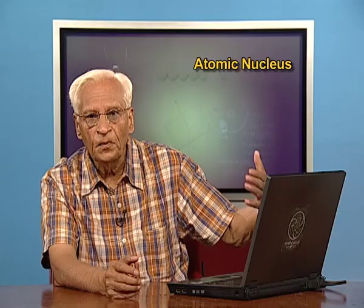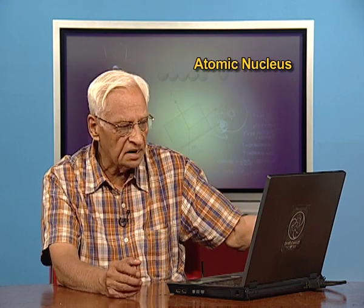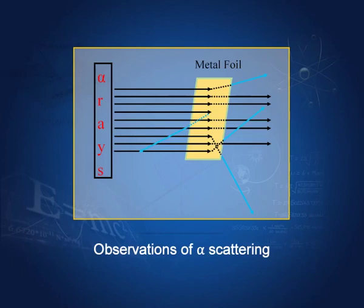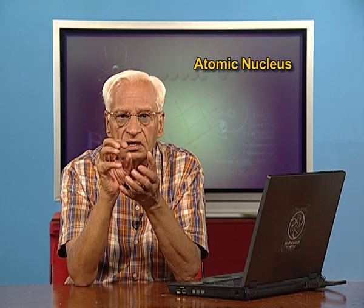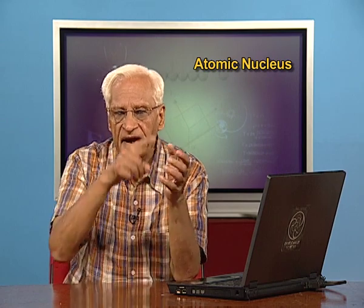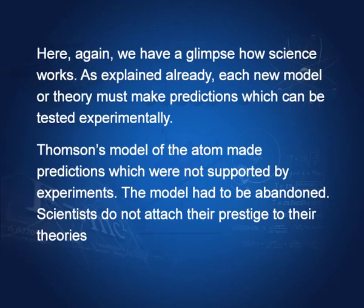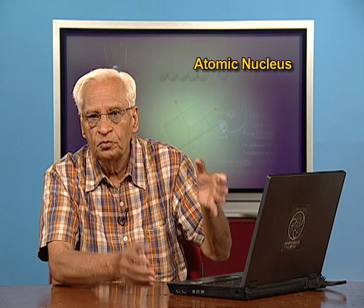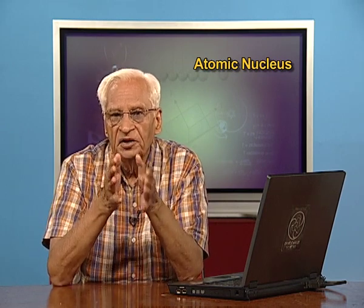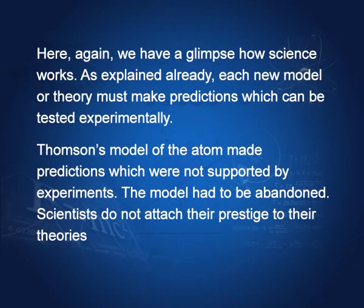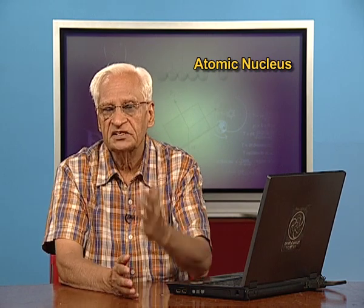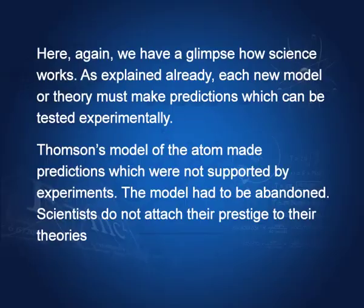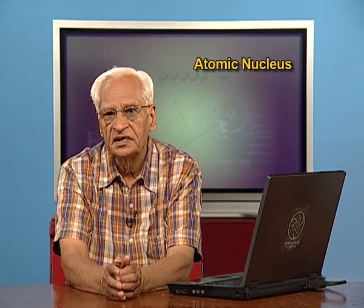After this, he proposed his own model of the atom. That model was like the solar system — we have the positive charge inside at the center of the atom. This center is known as the nucleus, and electrons go around it. Now, I must point out again: each new model or theory must make predictions which can be tested experimentally. This I have told you earlier also — each new theory or model must make predictions which can be checked experimentally. And if those predictions are found to be correct, then the theory is accepted. Otherwise, it is rejected or modified.